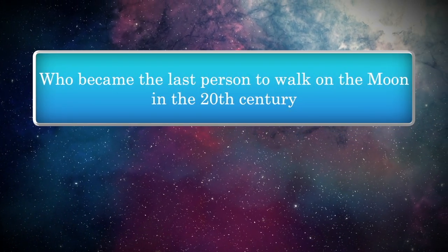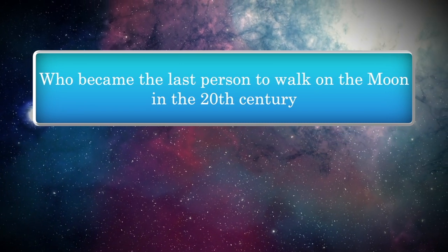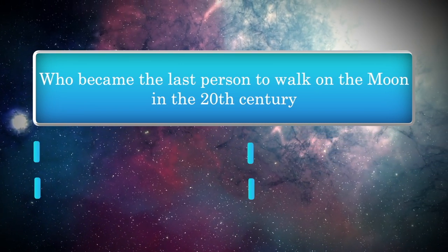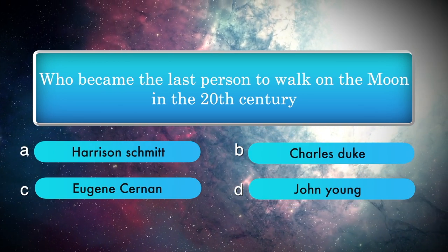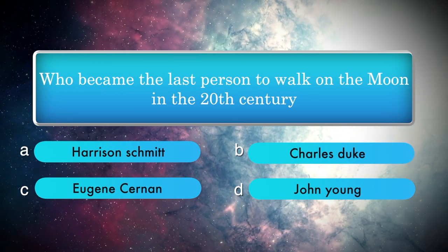Who became the last person to walk on the moon in the 20th century? Options: Harrison Schmitt, Charles Duke, Eugene Cernan, John Young.